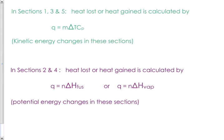As I said before, in sections one, three, and five, the heat lost or gained can be calculated by Q equals M delta T Cp. In those sections, the temperature is changing, which means the kinetic energy is changing. But in sections two and four, energy is being absorbed in a different way. The temperature is not going up. Instead of the molecules moving faster, the molecules are either moving farther apart when being heated or closer together when being cooled. So we need two different formulas.